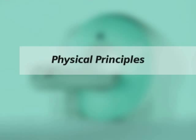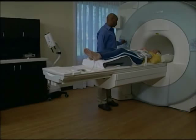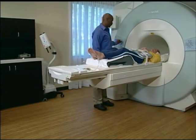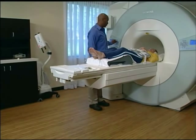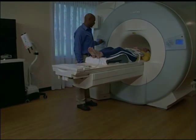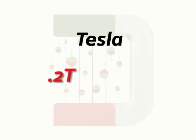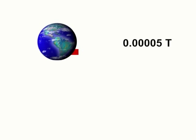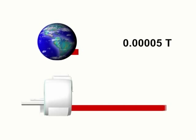The patient is positioned in a powerful, homogenous static magnetic field, generated here by a cylindrical magnet. The strength of the magnetic field is indicated in units of Tesla. The Tesla strength for human imaging ranges between 0.2T and 3T. In comparison, the Earth's magnetic field is approximately 0.00005T. The static main magnetic field of a 1.5T magnet is approximately 30,000 times stronger than the Earth's magnetic field.